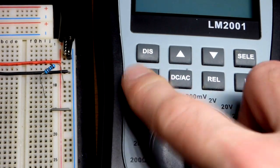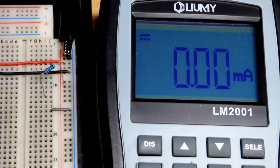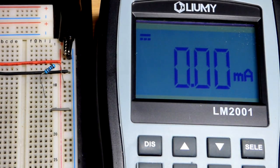For this meter, you also have to hit the power button to turn it on, and there you can see it's ready to measure milliamps.